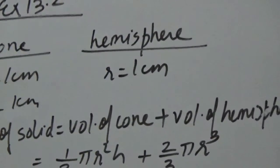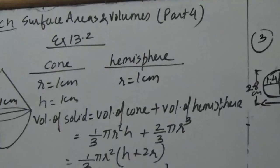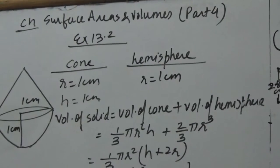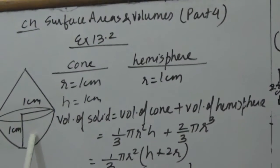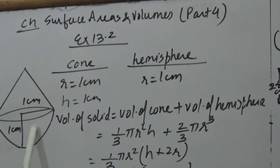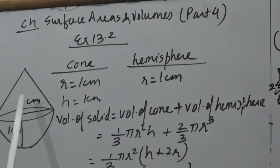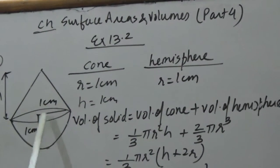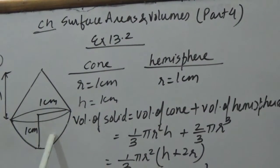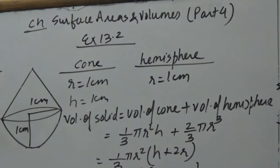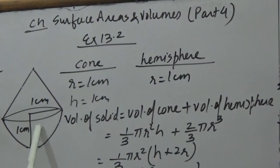We have to find the volume of the solid in terms of pi. Volume of solid equals volume of hemisphere plus volume of cone. When two solids are combined, we add their volumes.